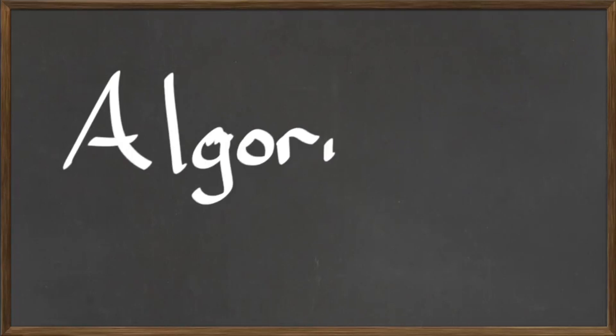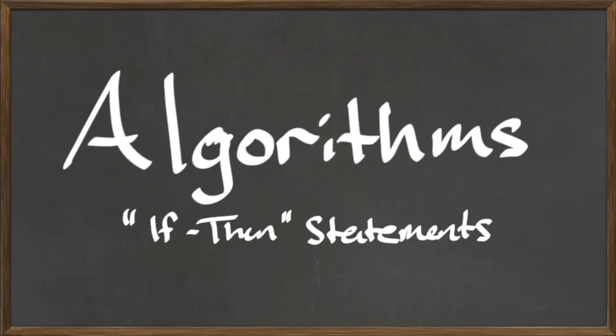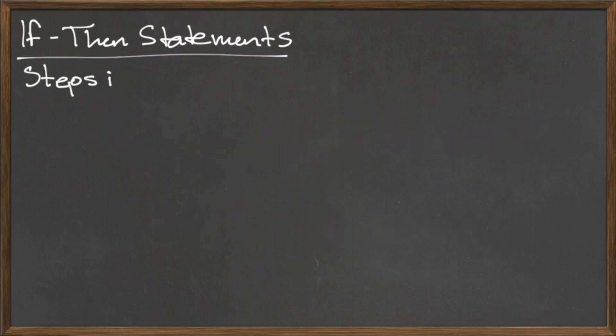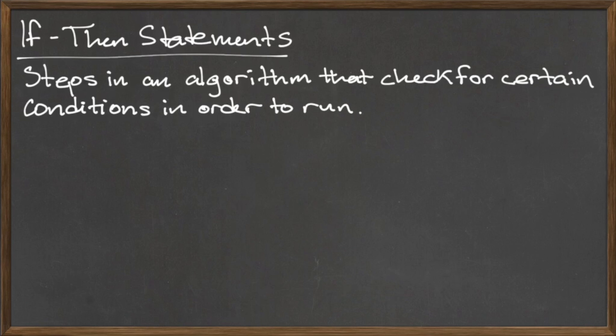In this video, we'll continue our discussion of algorithms with if-then statements. An if-then statement is a special type of statement known as a conditional, in which the instructions that follow the word 'then' are only followed if the condition that follows the word 'if' is true. If the condition following 'if' is false, the instructions following 'then' are skipped, and we move to the next step in our algorithm.